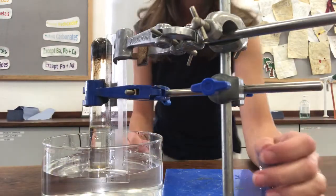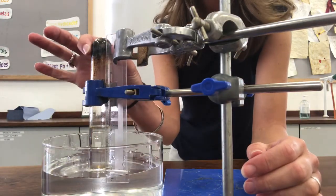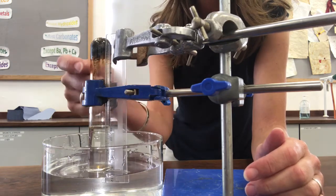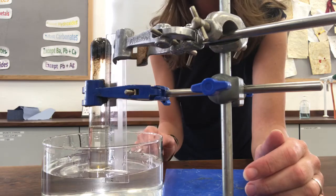So this is a week later, and you can see that the iron wool up in the top of my boiling tube has gone quite rusty. It's got blackened, and there's some tinges of orange around it. And this side of it is very orange as well.